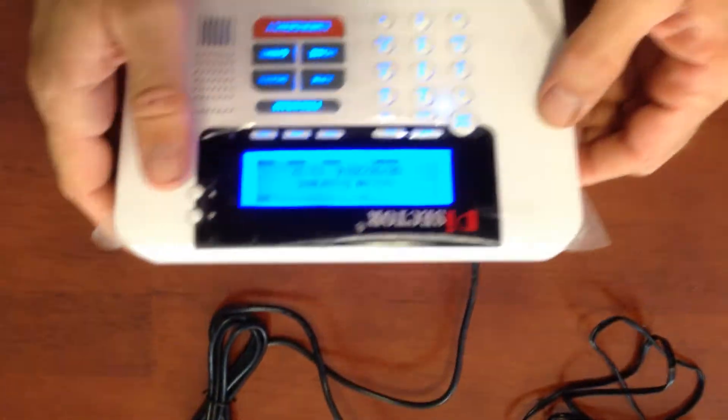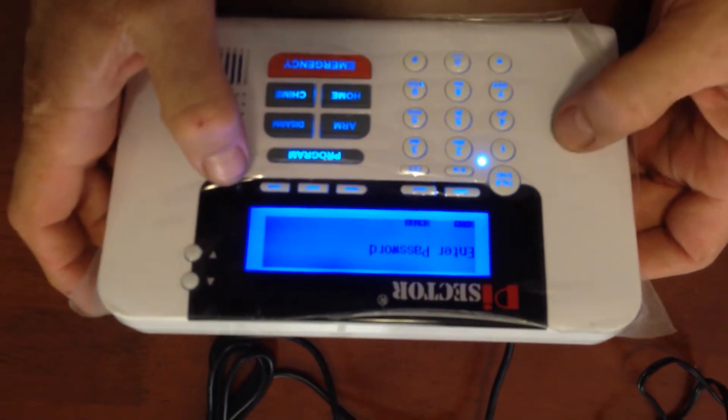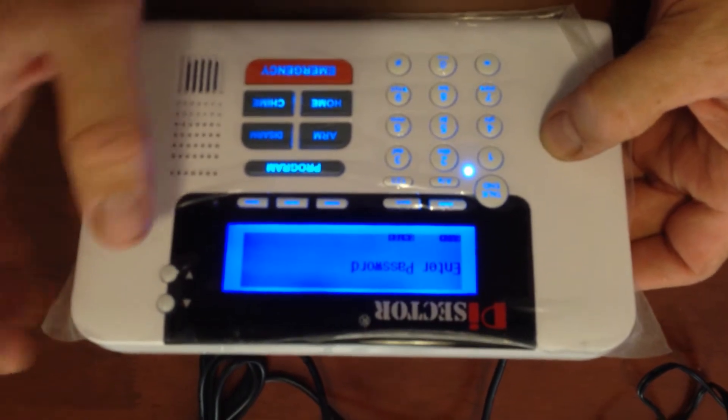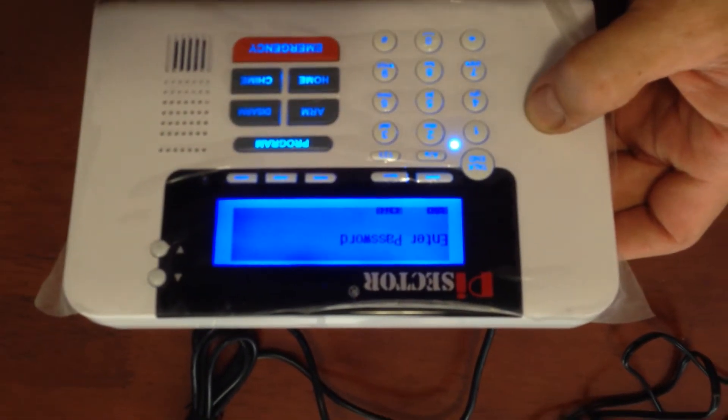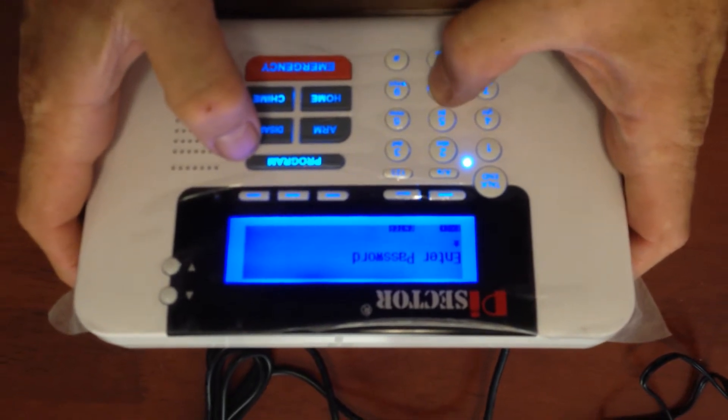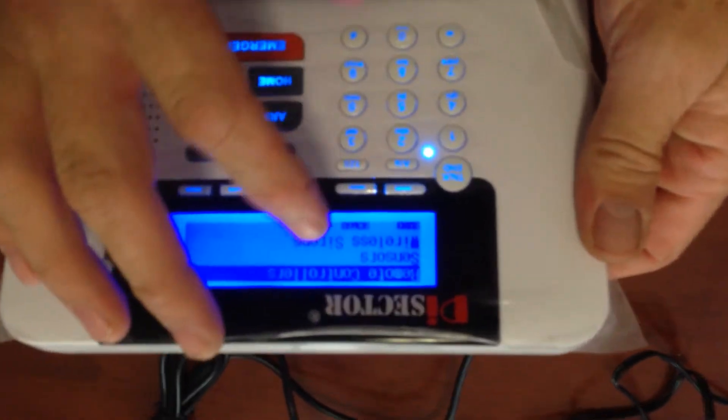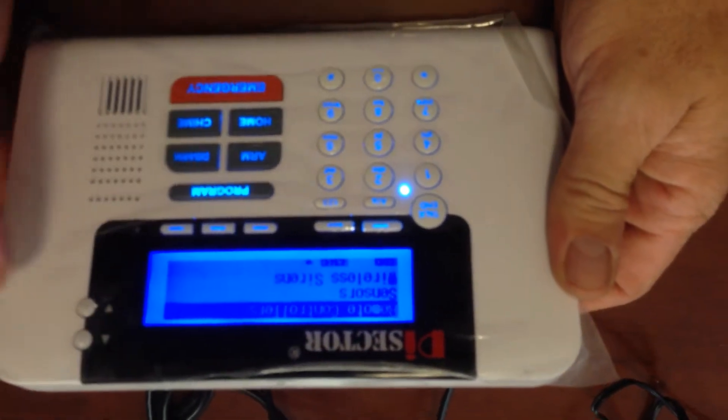Now we're going to go to program and enter your password. Whatever your password is, this is a new panel preset from the company, so it's going to be six eights: 1, 2, 3, 4, 5, 6. Now you're going to see remote control, sensors, wireless sirens. We're going to go to wireless sirens.